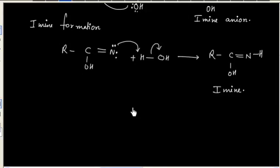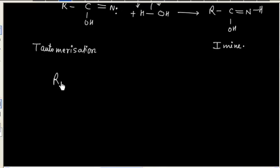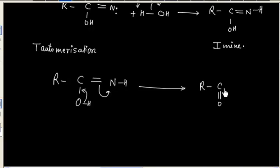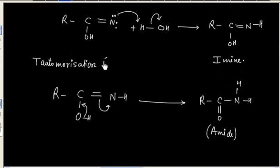Now in the next step, this imine can tautomerize. So we have tautomerization. This imine can go to the amide. This tautomerization step is simply amide formation.